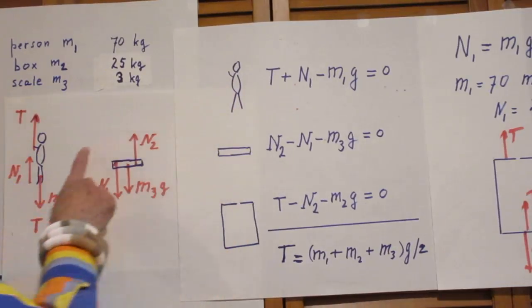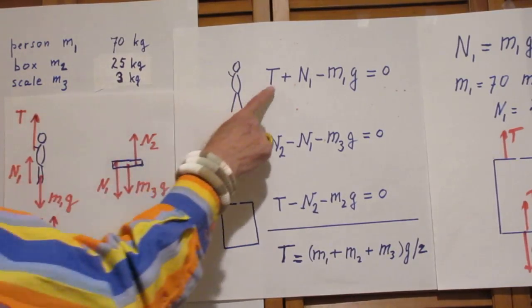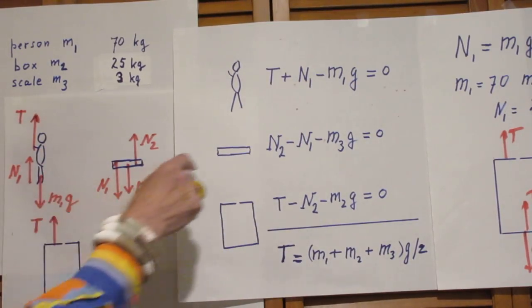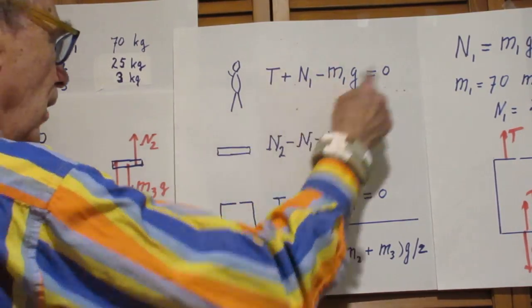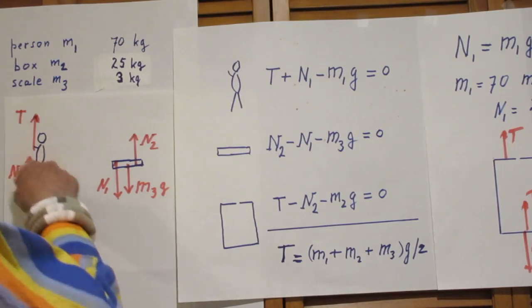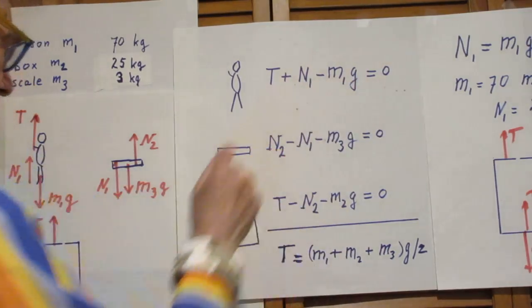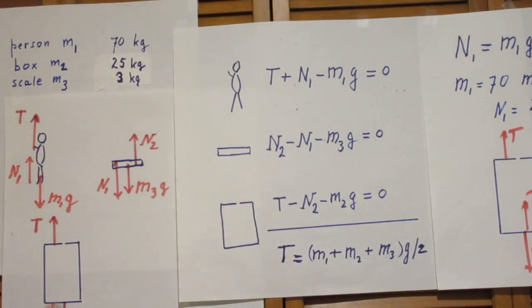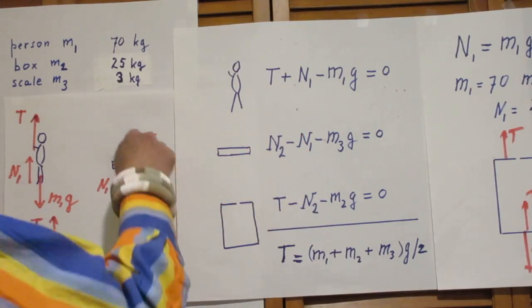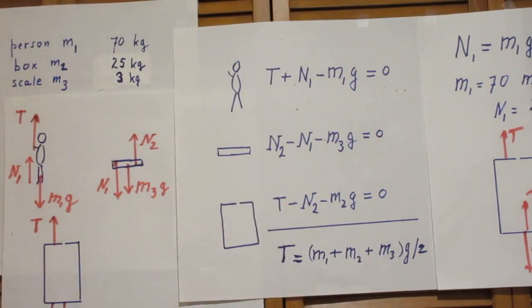So let's go to the person. T up, I call that positive. N1 up, I call that positive. m1g down, I call that negative. The sum is zero because the whole problem is static. No one has any acceleration. The system is all at rest. So the net force on this person is zero. That's what you see here. The net force on the scale must also be zero. So N2 upwards, minus N1 down, minus m3g must also be zero.